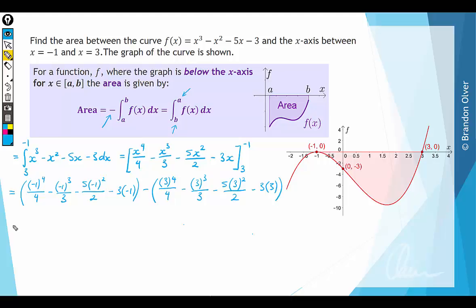So if you go through and simplify that, we have 1 over 4, plus 1 third, minus 5 over 2, plus 3.